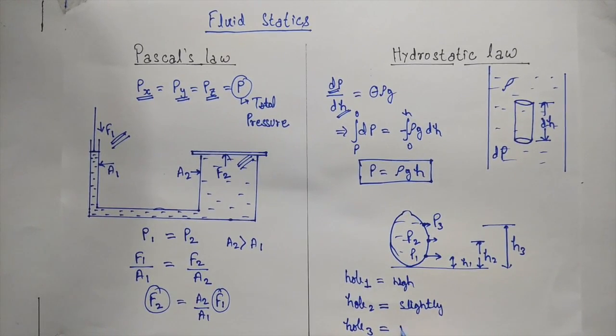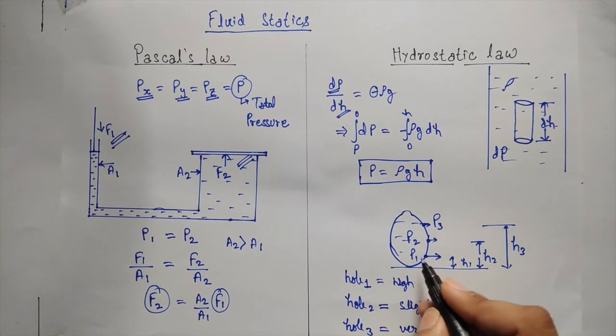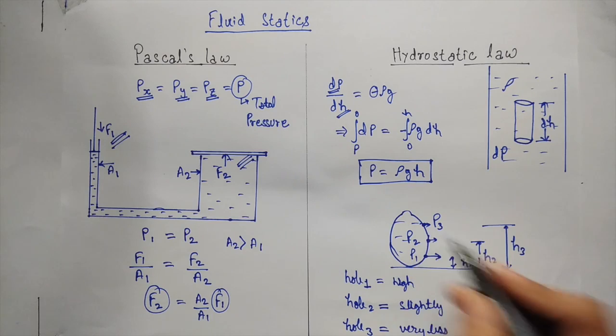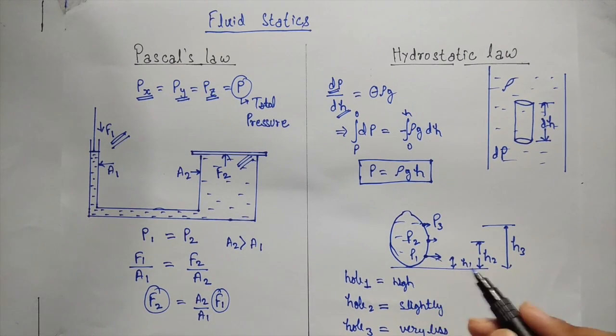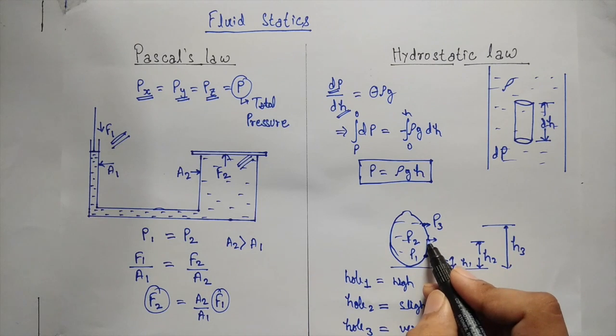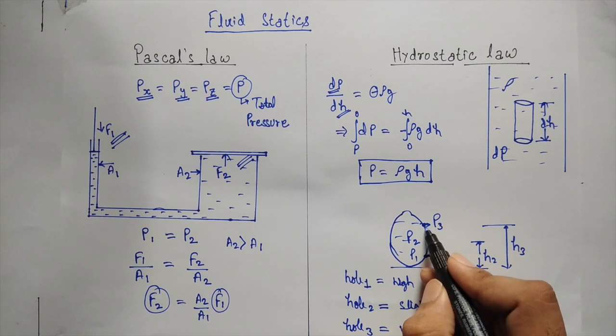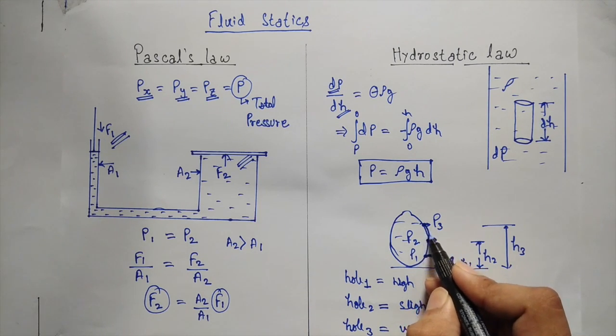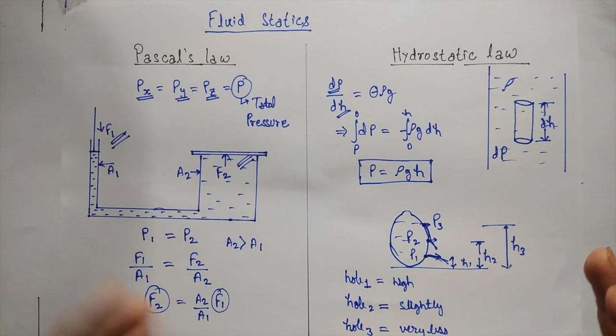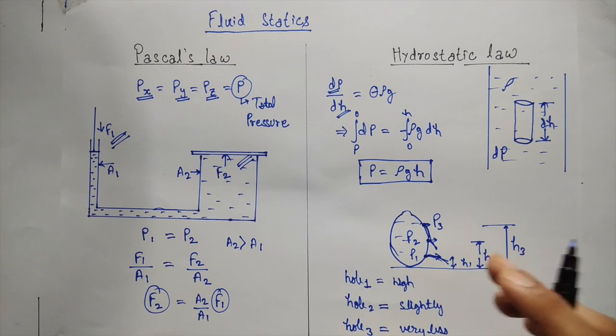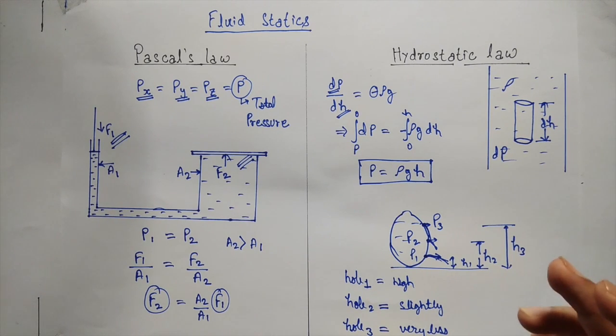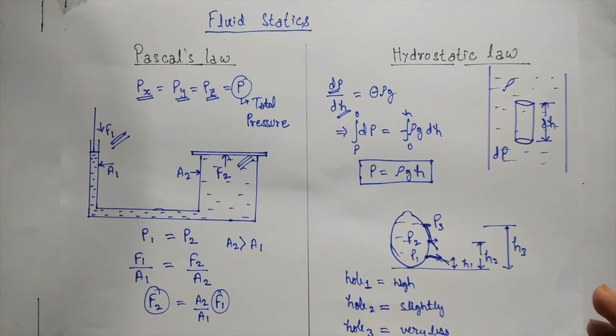So high amount of water will come from here, from here it will be slightly less, and from here it will be almost at the surface. This is the childhood example that we have done so many times in our childhood, filling a balloon with water and then bursting it.